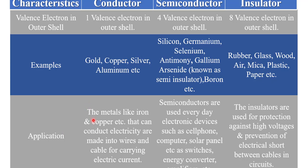Applications: metals like iron and copper that can conduct electricity are made into wires and cables for carrying electric current. Semiconductors are used in everyday electronic devices such as cell phones, computers, solar panels, switches, energy converters, amplifiers, and diodes. Insulators are used for protection, high voltage applications, and prevention of electric shocks between cables and circuits.